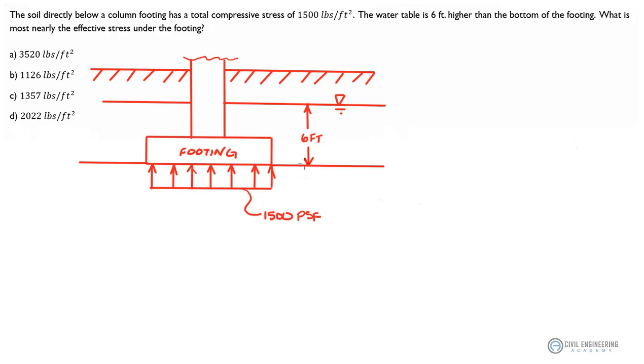We've got our water table here that's six foot above the base of the footing. And at the base of the footing there is a compressive stress in the soil of 1,500 pounds per square foot, which is represented by this distributed load right here. This is basically what we're dealing with. We've got this 1,500 PSF down below the footing, but it is below the water table, six foot below the water table.